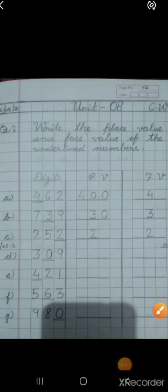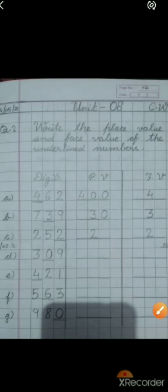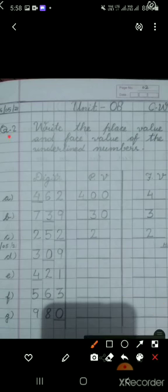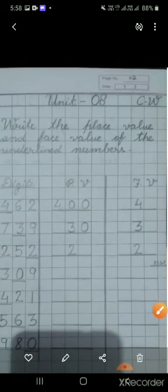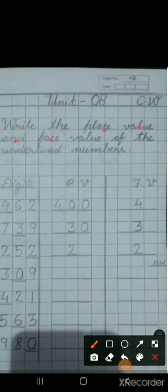Now, you have to solve question number 2. But before this, you have to make one line heading and you will have to write unit's number that is 8 and CW and date. You will have to write page number also. After leaving one line, you have to start question number 2. Question is written, you can see students, write the place value and face value of the underlined numbers. For this, you will have to make three columns.